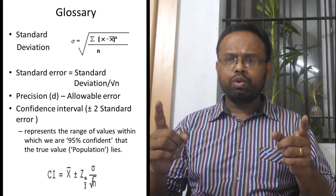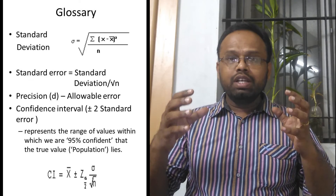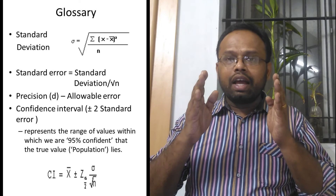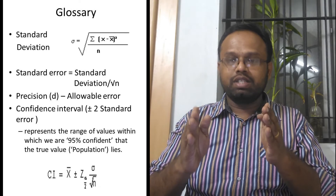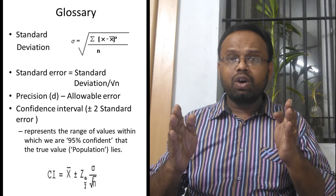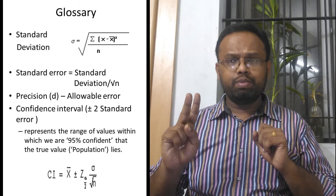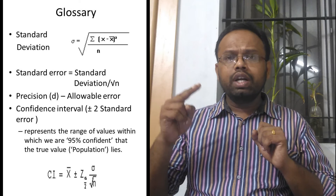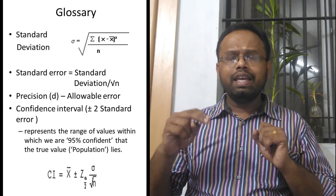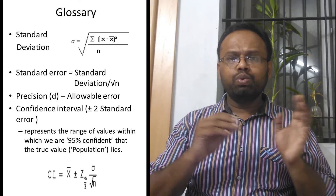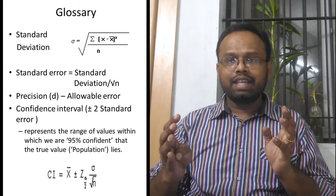We have one more term called precision — how precise you are going to be. Before doing the study, based on the prevalence found from another study and the variability in your population, you decide how much error you are going to allow in your study. That level is called precision or allowable error. There are two types: absolute and relative precision. Suppose I want to study a prevalence of anemia found as 20% in a previous study; in my study I expect somewhere between 16% to 24%, allowing an error of 4 percentage points on either side — that is your precision.